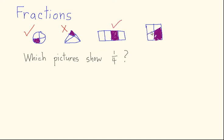Finally, here's another rectangle. I've done something where I've divided it in half, but this other line doesn't seem to be half — it's drawn in a funny place. This piece is a bit too big to represent one fourth of the rectangle, so this shaded area does not represent one fourth. Hopefully you got that right, which means you're understanding what's going on so far.